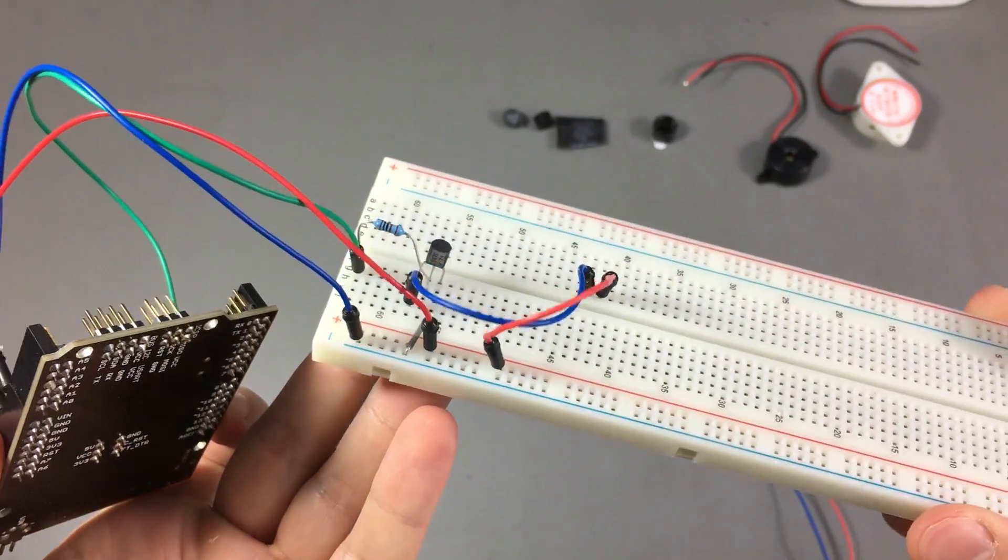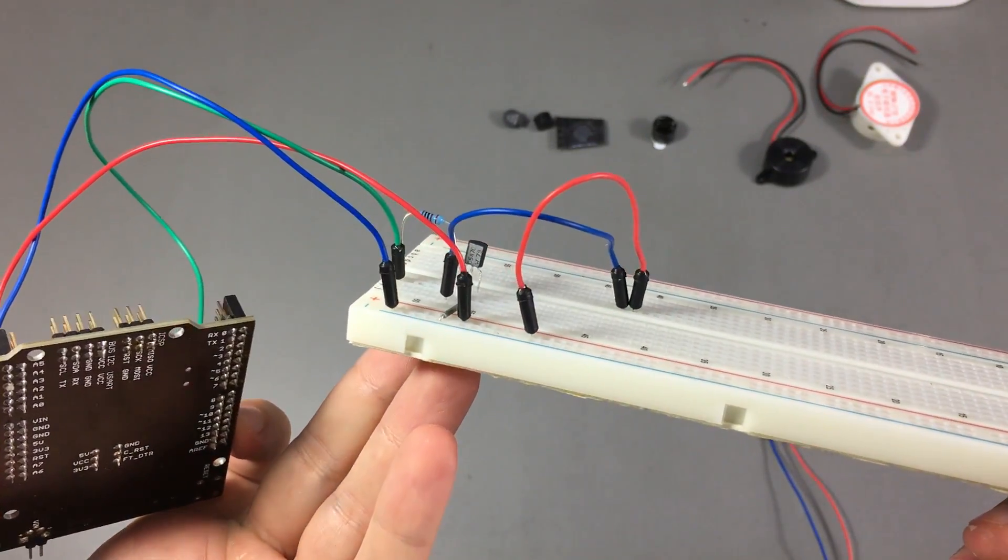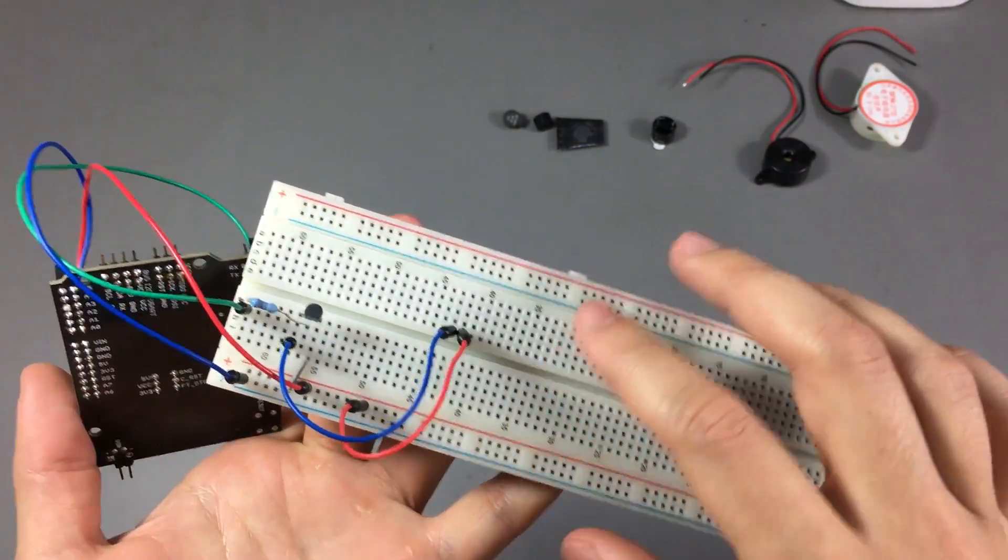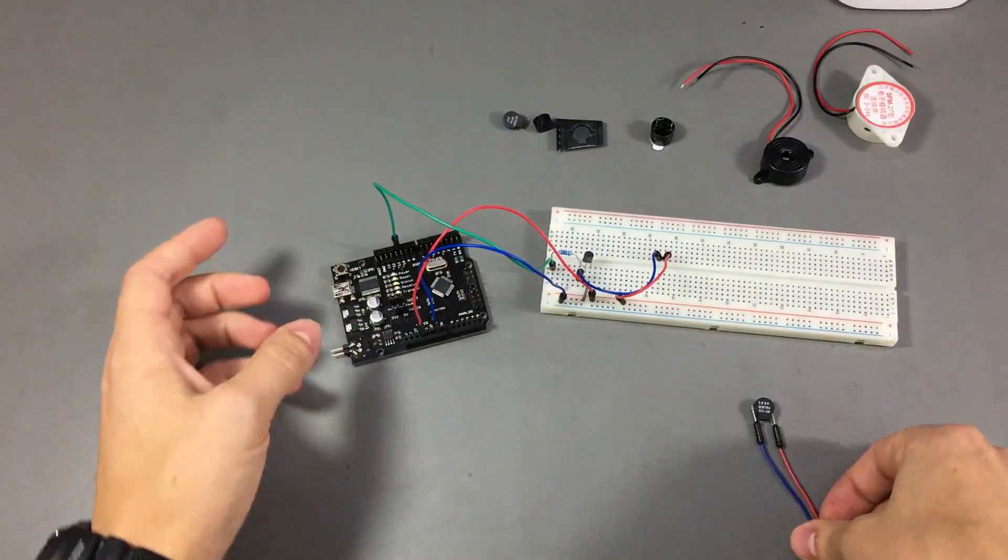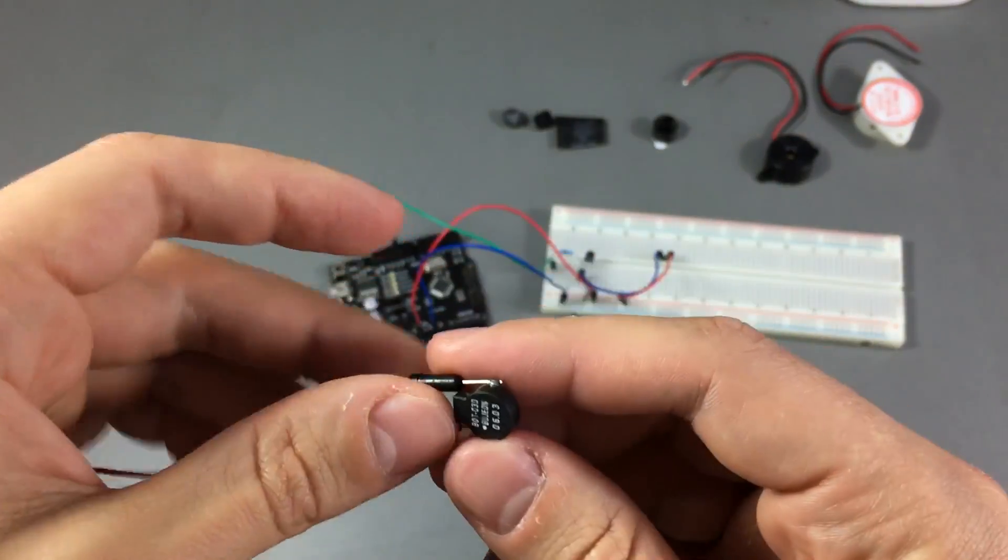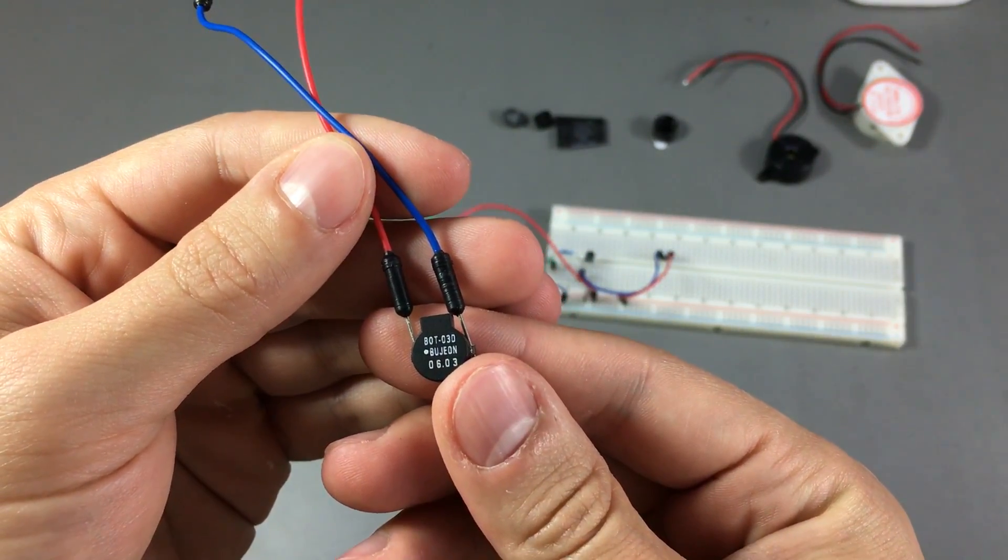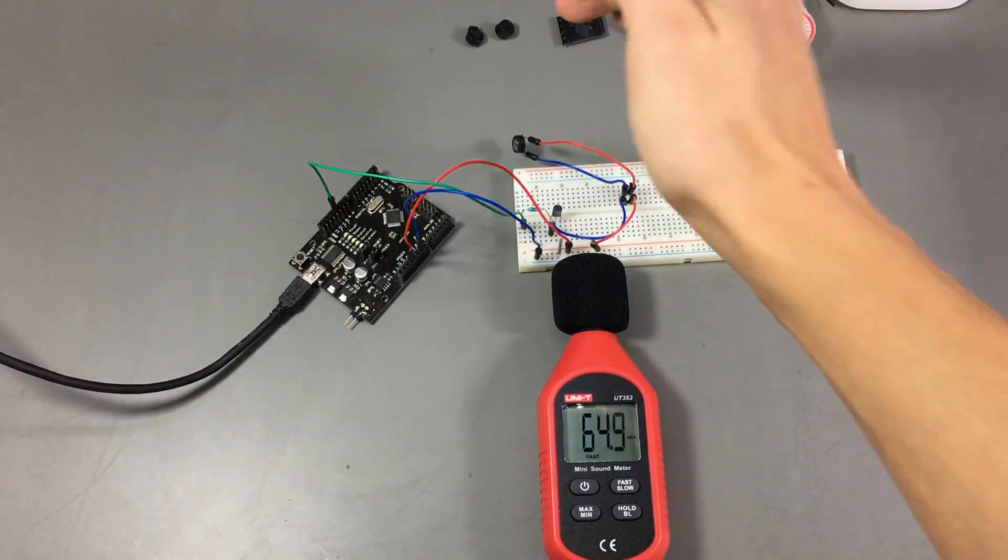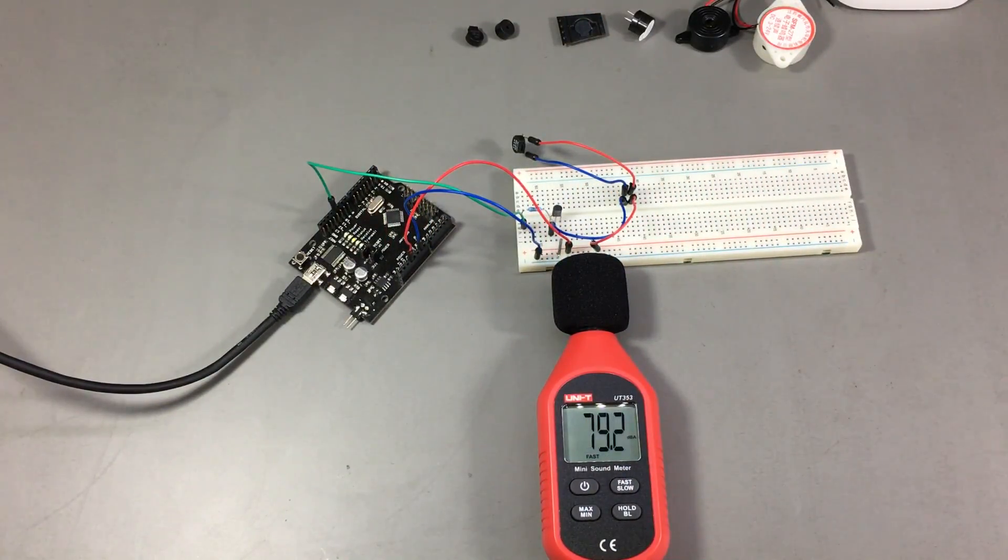On the breadboard I have a simple transistor circuit. It's an NPN transistor which is pulsating the negative rail to the buzzer. We're going to start with this little guy. Here is its part number. So we're measuring at around 5 centimeters distance from the exit of the buzzer. I'm going to activate the min max function and then I'm going to start the code to go through the different frequencies.